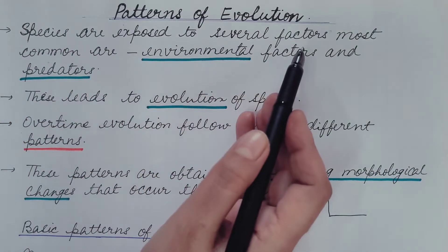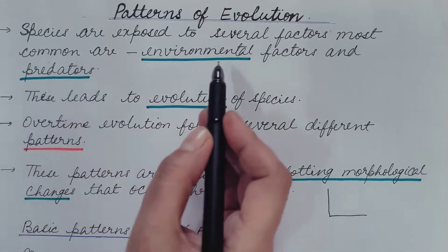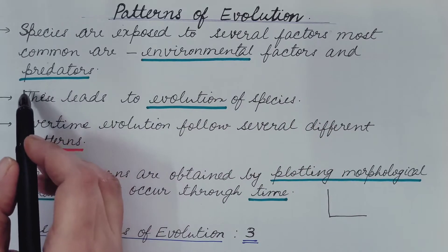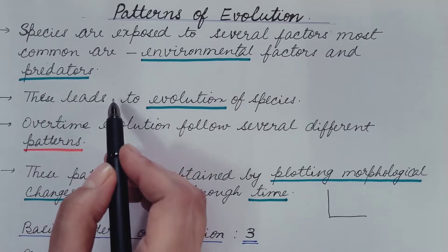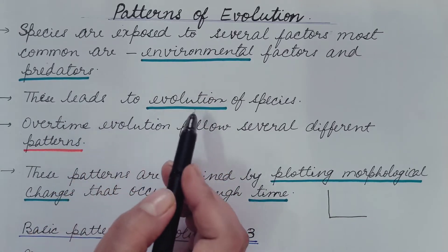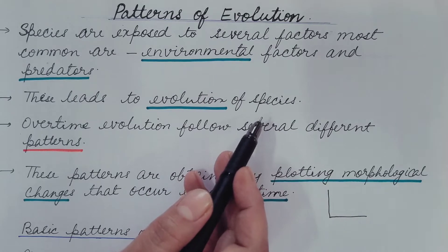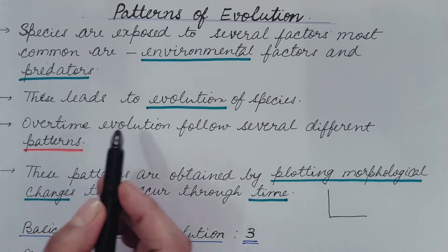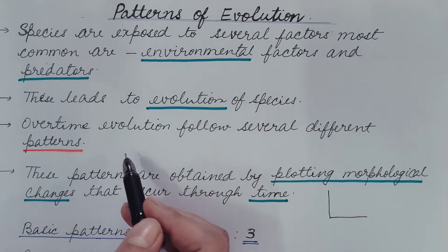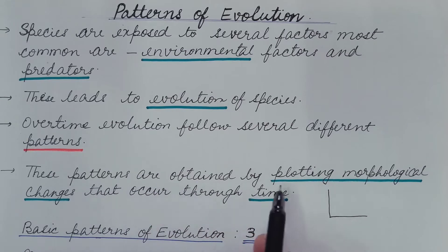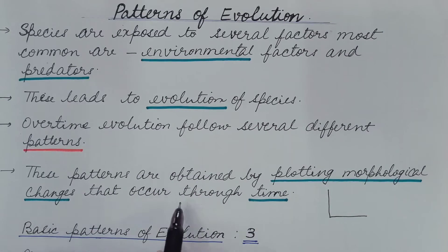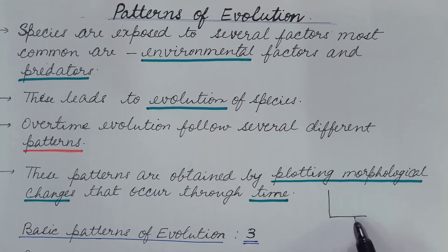We all know that species are exposed to several factors. Among them the most common are environmental factors and predators. Under the influence of these environmental factors, predators, and several other factors, the species undergo evolution — these undergo modification in order to get adapted to these factors. Over time, evolution follows several different patterns, and these patterns are obtained by plotting morphological changes that occur through time.